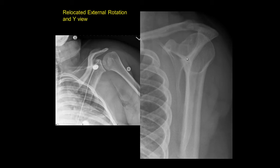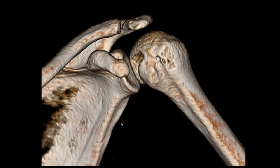Here's the Y view. And here's a 3D reconstruction of the CT showing the humerus with the greater and lesser tubercle and the bicipital groove, the glenoid, coracoid process, and clavicle acromion. Here is the fracture.